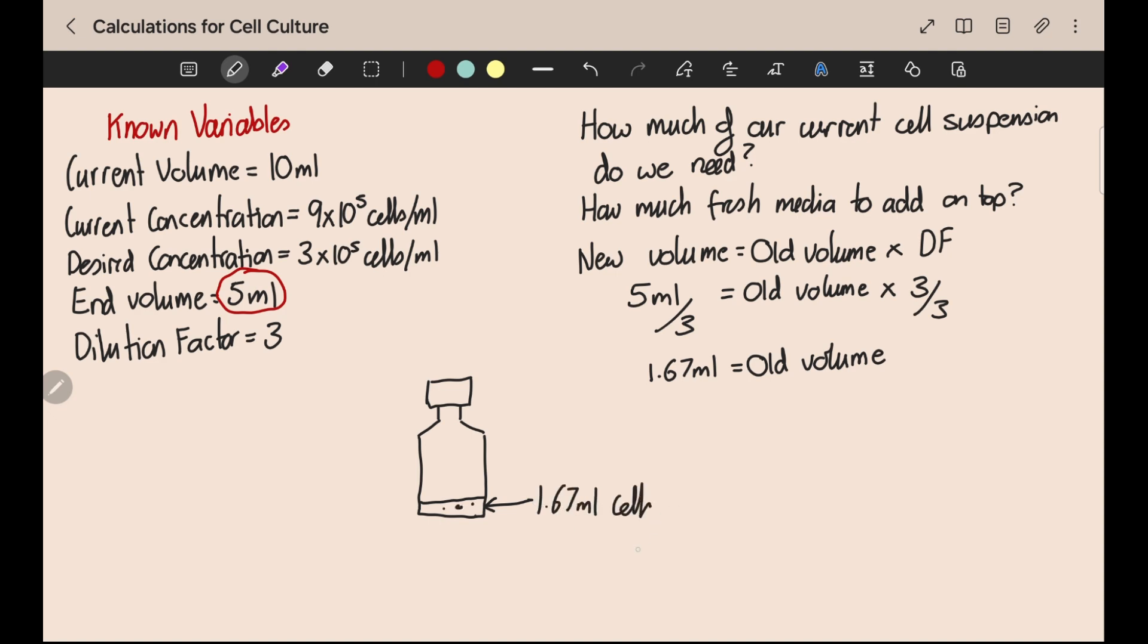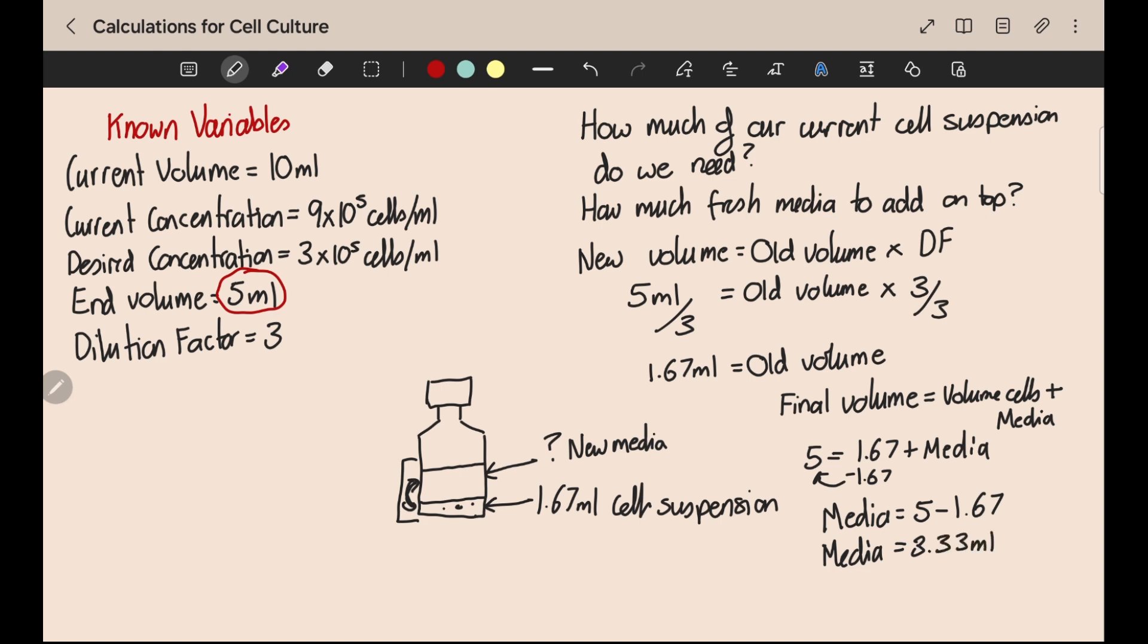We know that our final volume is going to be 5 mils, so we just have to work out how much media to add. Our final volume, that is the 5 mils, is equal to the volume of cell suspension we use plus the amount of fresh media. So our final volume as I said is 5 mils. We know we're going to add 1.67 mils of cells, so we rearrange that equation. 5 minus 1.67 equals 3.33 mils, so we need 3.33 mils of fresh media.